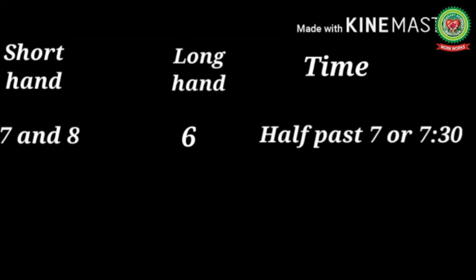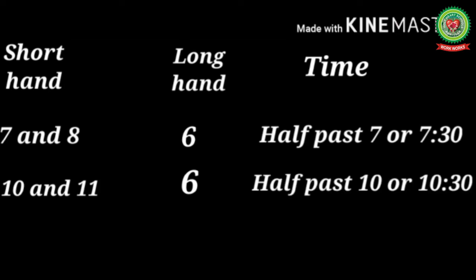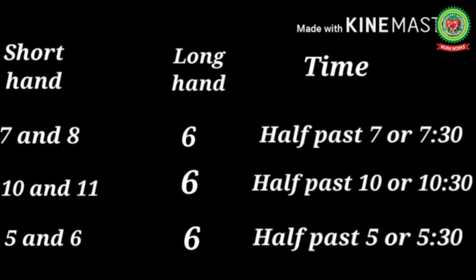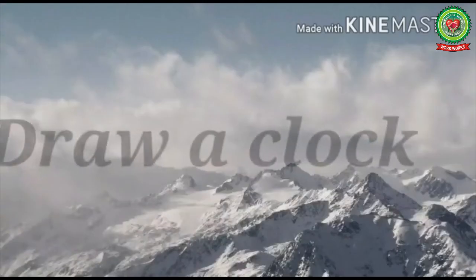If the short hand is between ten and eleven and the long hand is at six, what time is it? Yes, the time is half past ten, or ten thirty. Next example: if the short hand is between five and six and the long hand is at six, what time is it? Yes, the time is half past five, or five thirty.